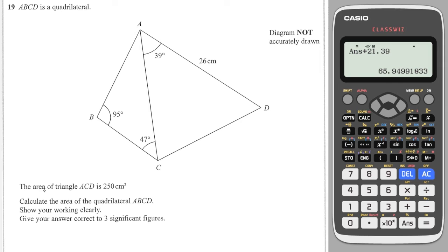We've got another question here but this time you're given the area of ACD. So in here is 250. So we can use the fact that you need two sides and an angle in between to work out the area.